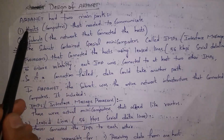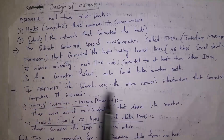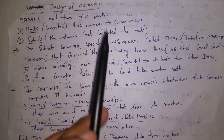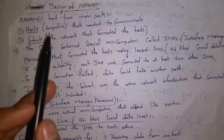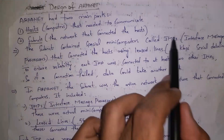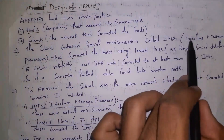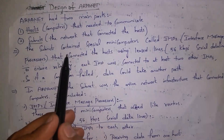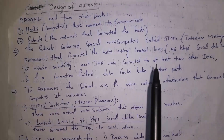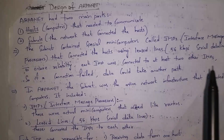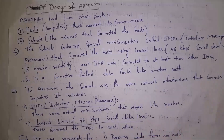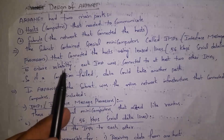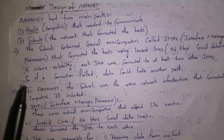The IMP device connected to the sender computer is called the source IMP, and the IMP device connected to the destination computer is called the destination IMP. This is ARPANET architecture. ARPANET has two main parts: hosts — the computers that need to communicate — and subnets, which is the network that connects host devices. Subnet contains special mini-computers called IMPs, which connect host devices using leased lines. The data transfer speed in ARPANET is 56 kbps.